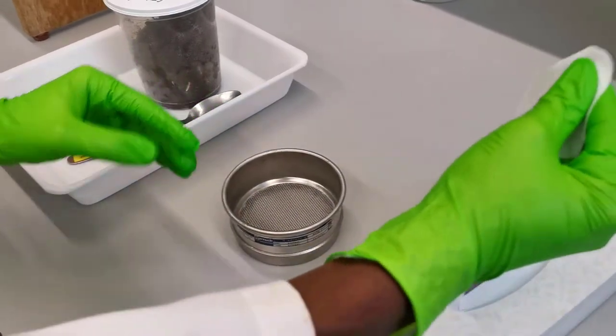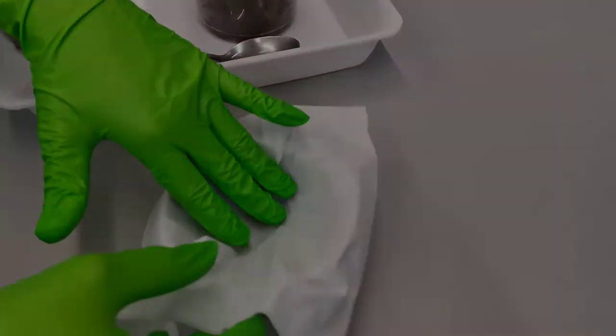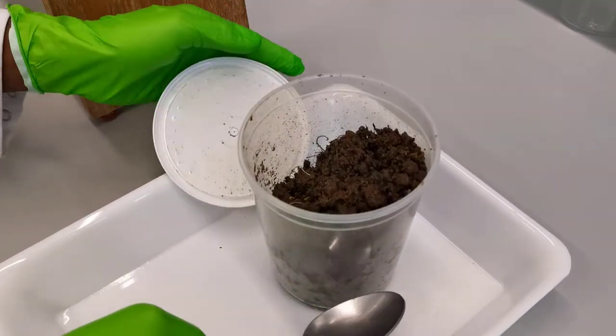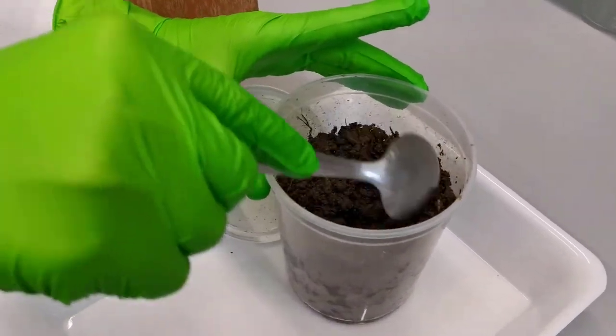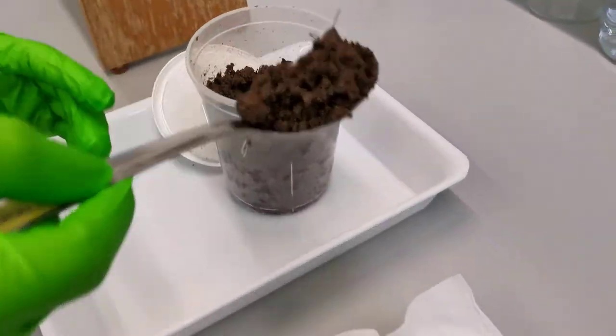Now place a tissue paper on the sieve as shown and add some soil on the tissue paper. Remember you can also use plant materials such as roots to extract motile nematodes depending on the nature of your work.